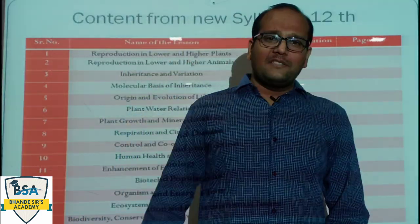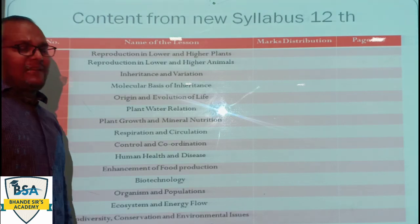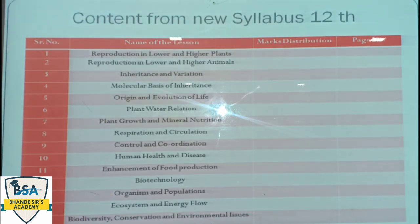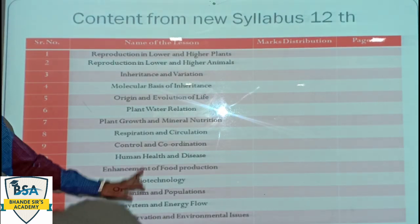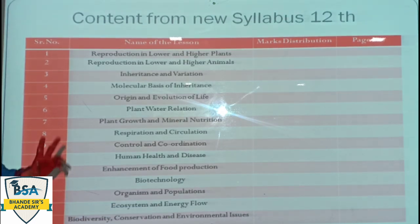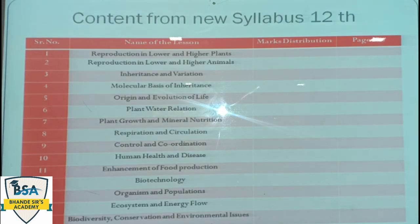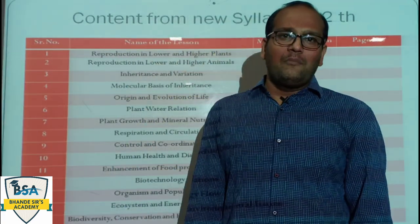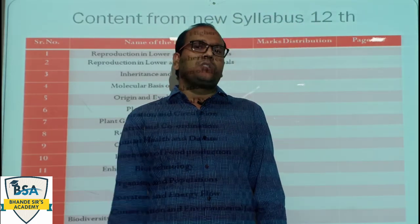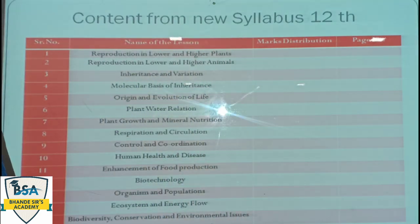Now let's take a look at the second slide — the content from the new syllabus of Class 12, which is our new syllabus recently uploaded on our social network. You can see some changes: Origin and Evolution of Life, Plant Water Relations, Plant Growth and Mineral Nutrition, Respiration and Circulation, Control and Coordination, Human Health and Diseases, Enhancement of Food Production, Biotechnology, Organism and Population, Ecosystem and Energy Flow, and lastly Biodiversity Conservation and Environmental Issues. This is our new syllabus of 12th State Board.